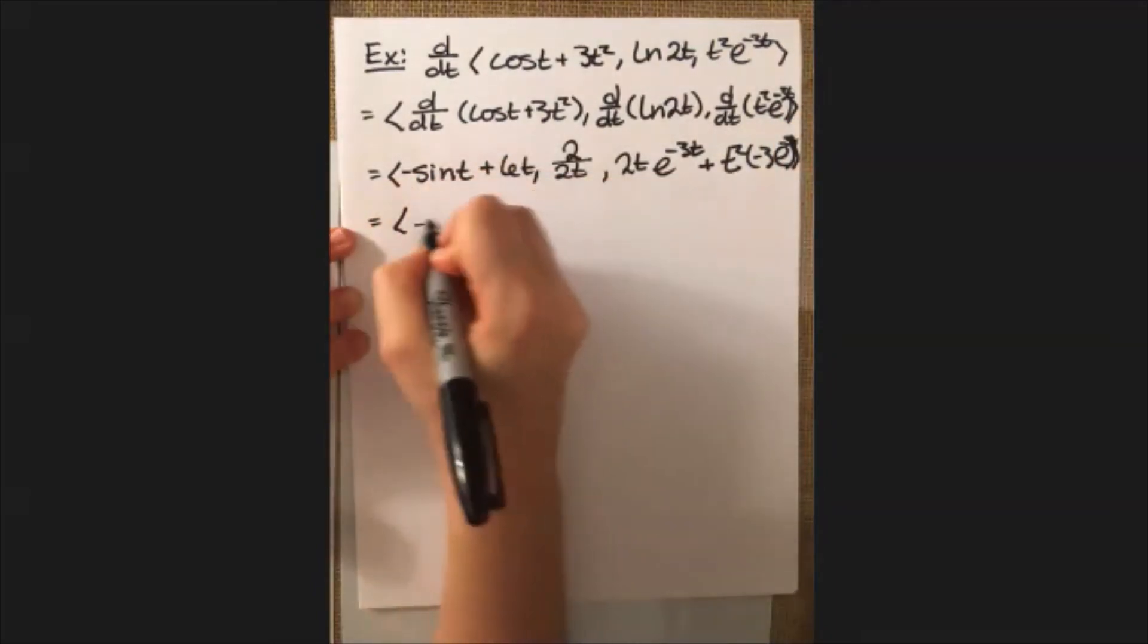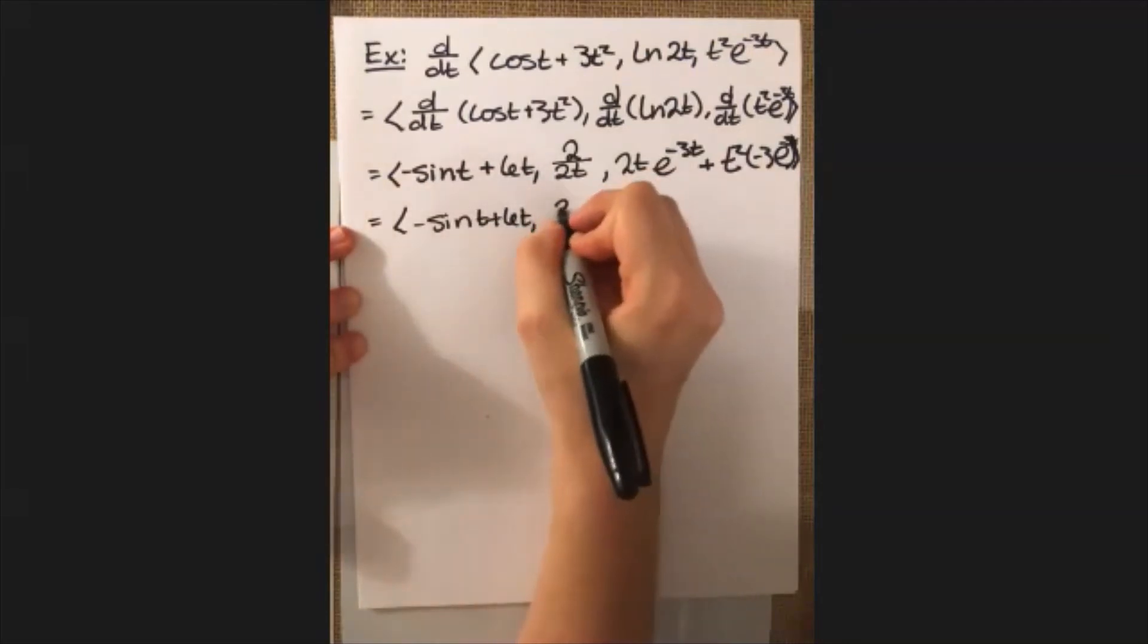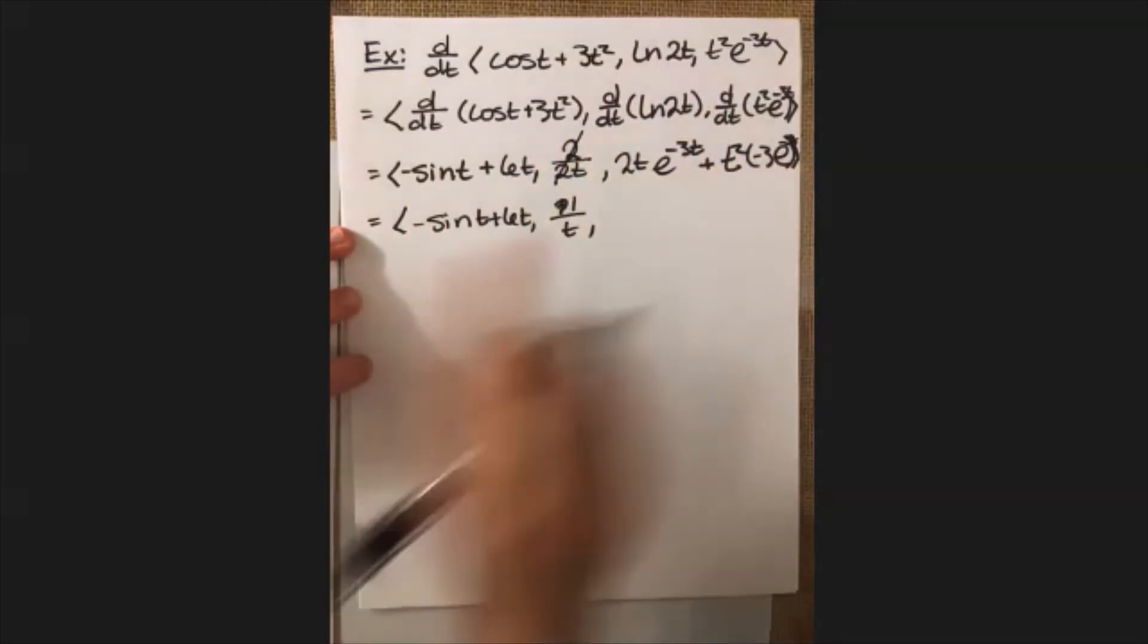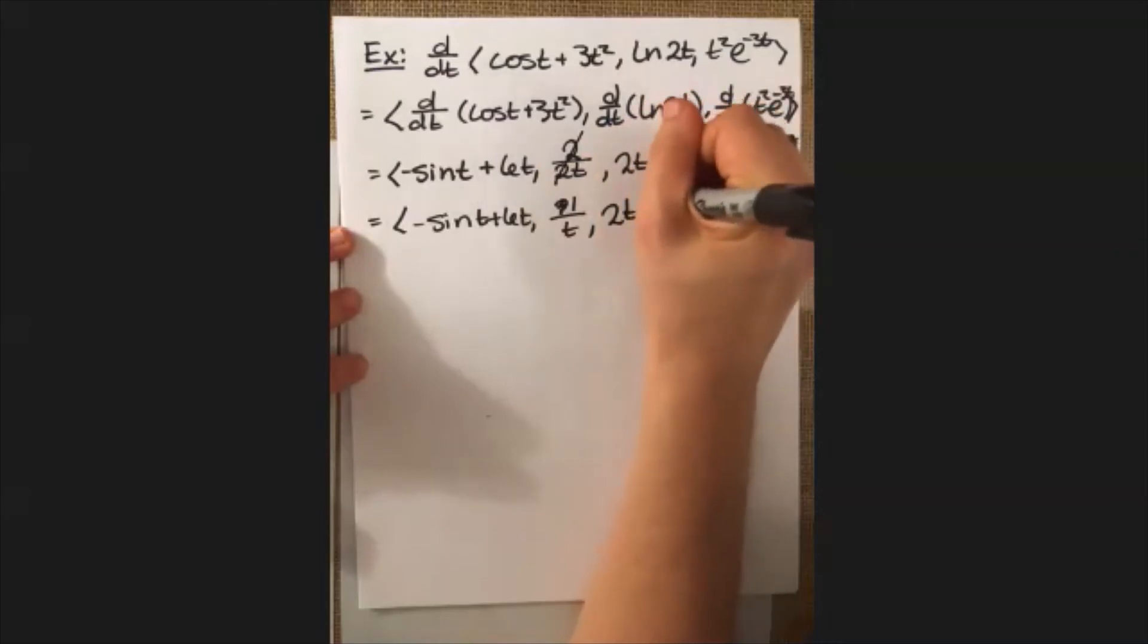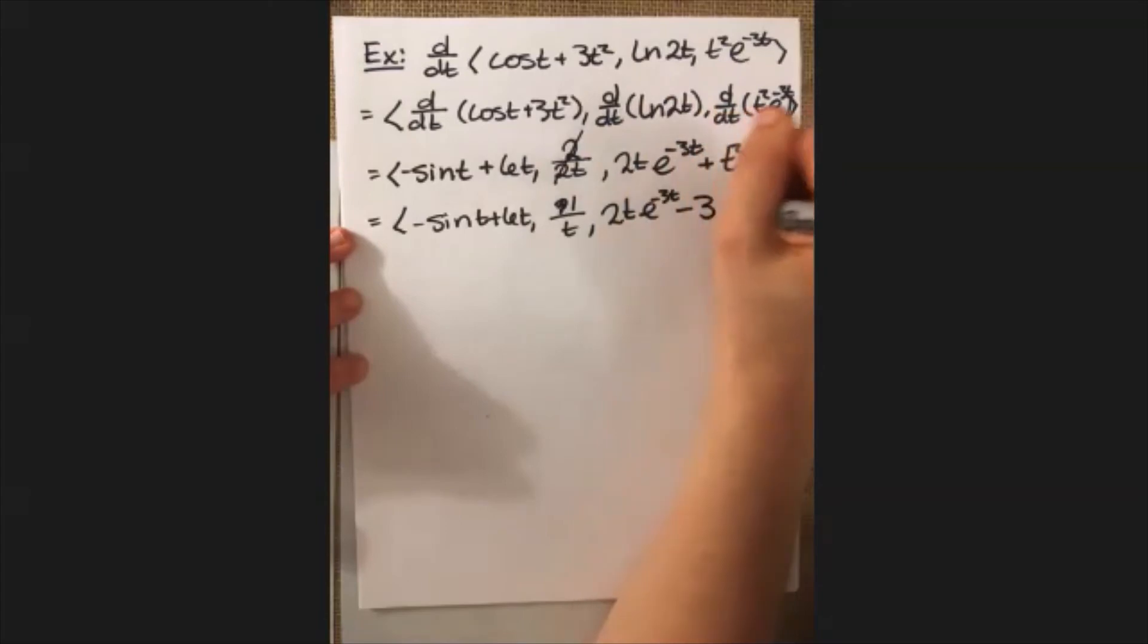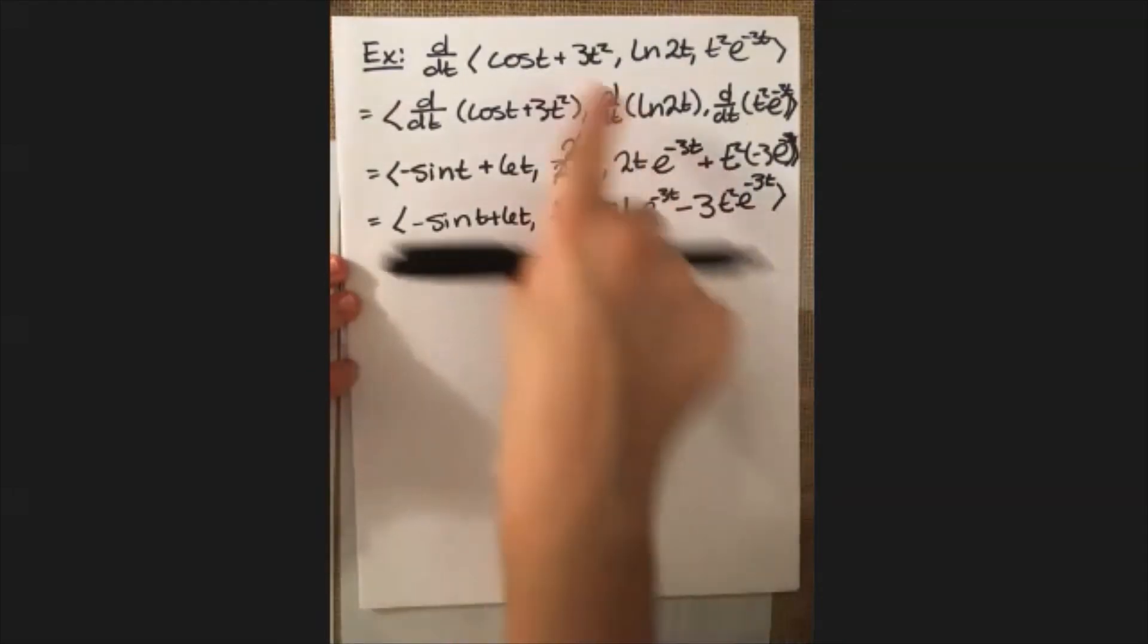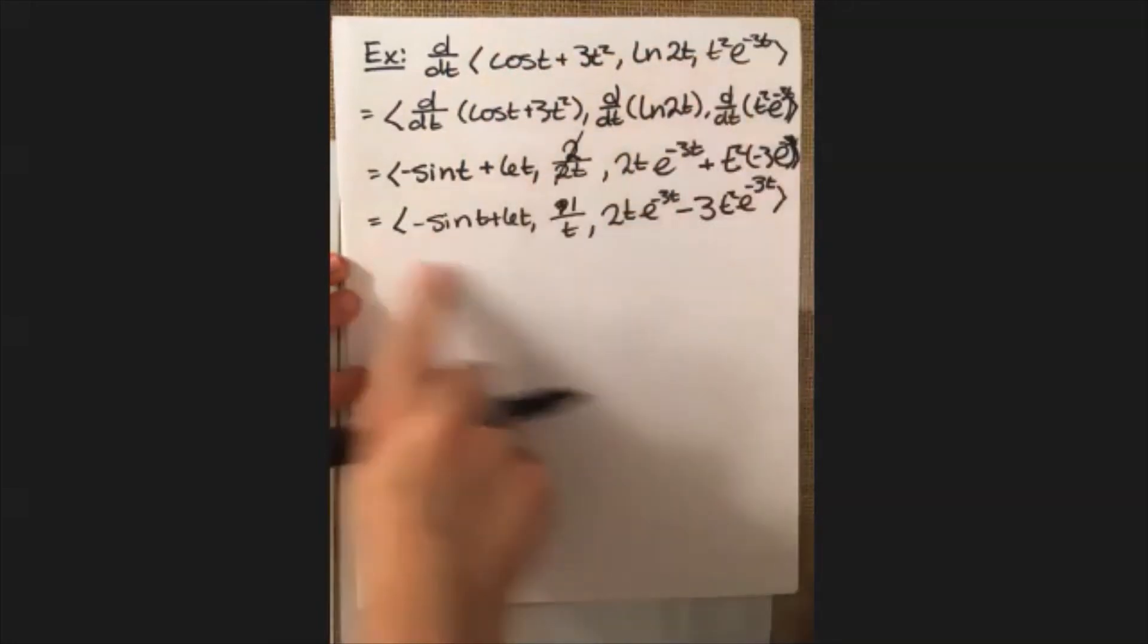I'll rewrite this so it looks a little bit tidier. So we get negative sine t plus 6t. And then this actually simplifies down, so we'll get 1 over t for our second component. And then right here, I get 2t e to the negative 3t plus actually minus 3t squared e to the negative 3t. Close the braces. And this is the derivative of this guy up here. So all we did was take the derivative of each component there and that's what you get.